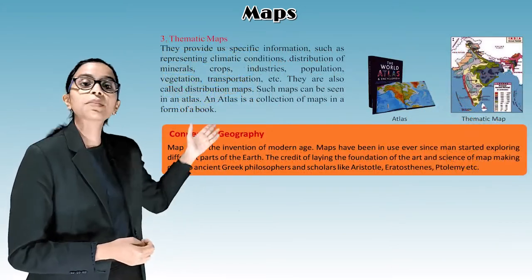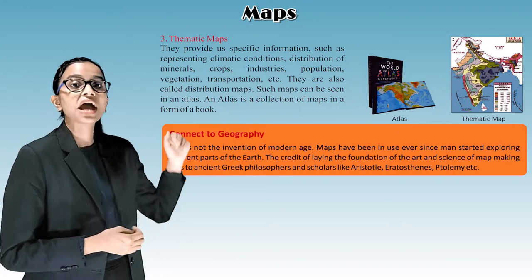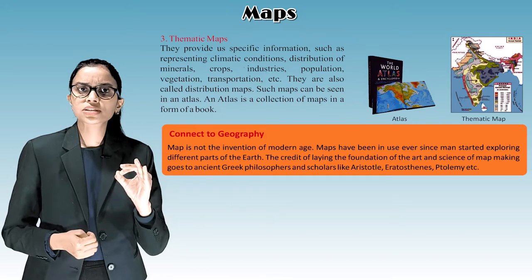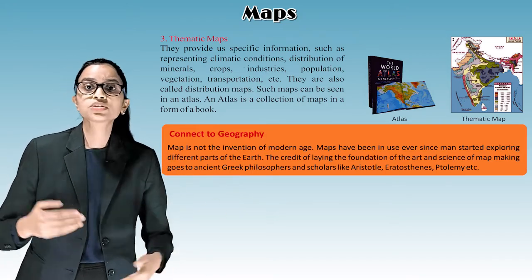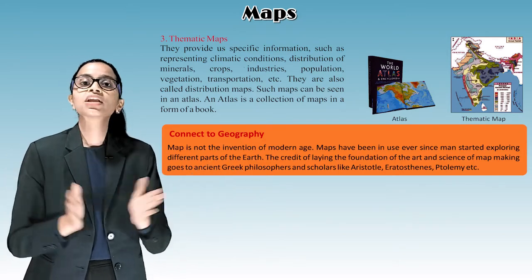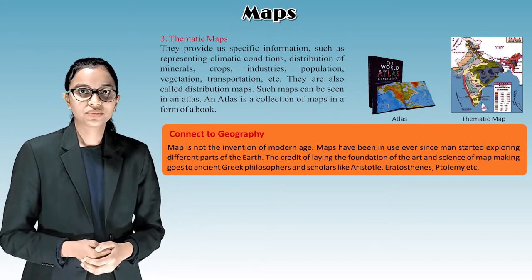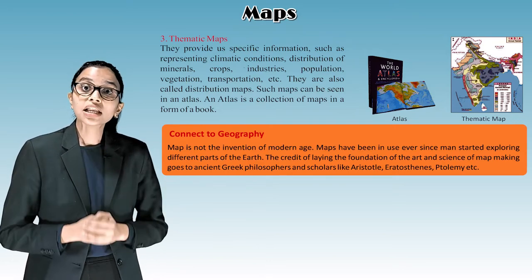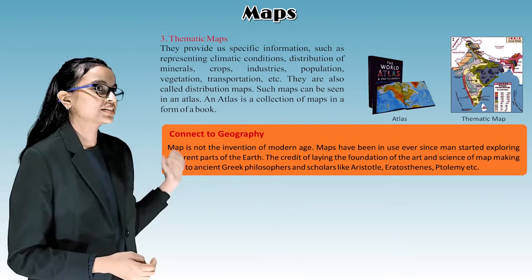Third one is thematic map. So children, are you able to see the thematic map? What are they? They provide specific information such as representing climatic conditions, distribution of minerals, crops, industries, population, vegetation, transportation, etc. They are also called distribution maps. Such maps can be seen in an atlas. An atlas is a collection of maps in a form of a book. That is thematic map.